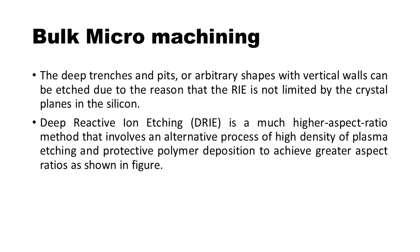Deep trenches and pits, or arbitrary shapes with vertical walls, can be etched because DRIE is not limited by the crystal planes in silicon. Deep Reactive Ion Etching (DRIE) is a much higher aspect ratio method that involves an alternating process of high density plasma etching and protective polymer deposition to achieve greater aspect ratios, as shown in the figure.